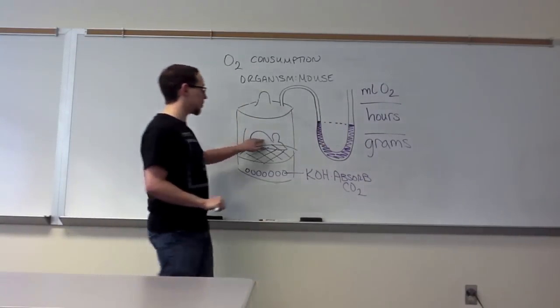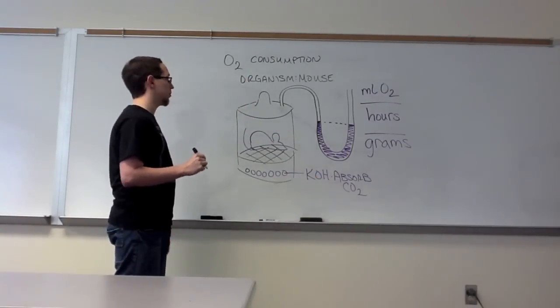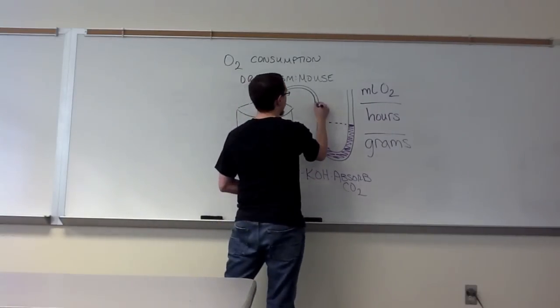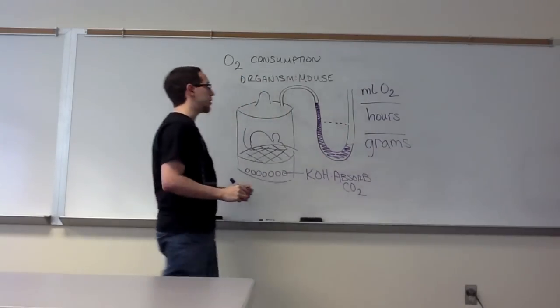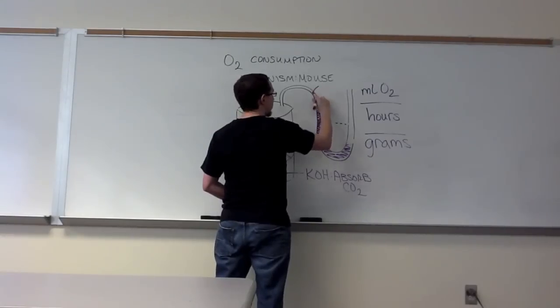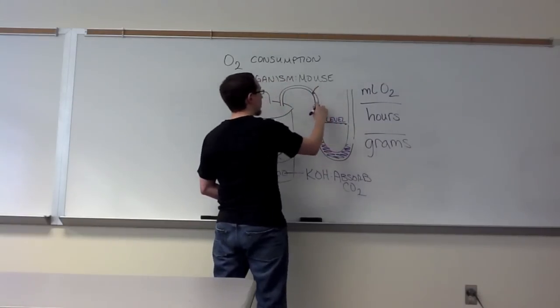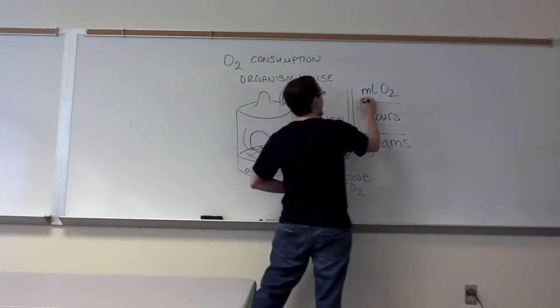So we obtain the mass of the mouse in grams. We absorb the CO2. Now what we do is we allow the mouse to breathe in oxygen over a certain period of time. And over that period of time, the water level changes. It becomes unleveled. And then what we do is we inject oxygen into the system to push the water level back to where it will be level. When we push the oxygen in enough to where the water becomes level, we see how much oxygen we actually had to place in there.